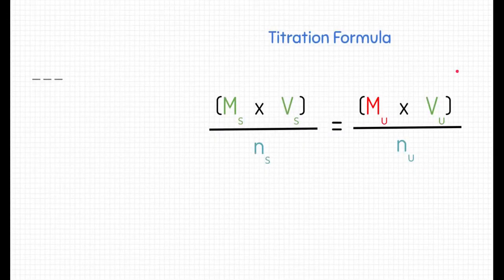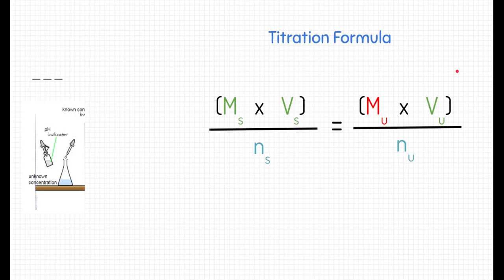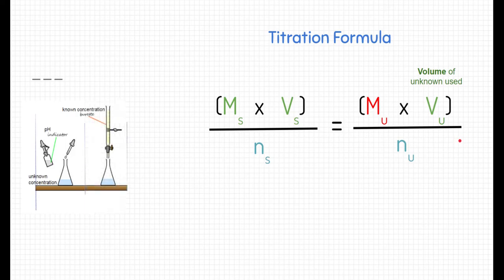All of this is done in order to find parts of the titration equation or titration formula, which is found on the back of your periodic table. There are three major parts. The green sections are the pieces we find during a titration. At the very beginning, we put an unknown solution in a flask with a pH indicator — that gives us the volume of the unknown. We also record the molarity of the stock solution, which goes in the burette.